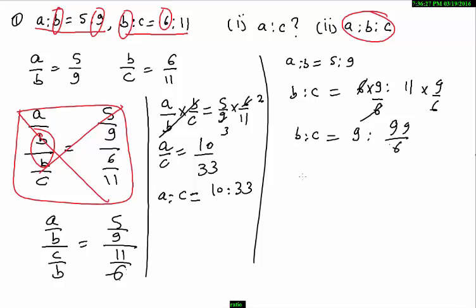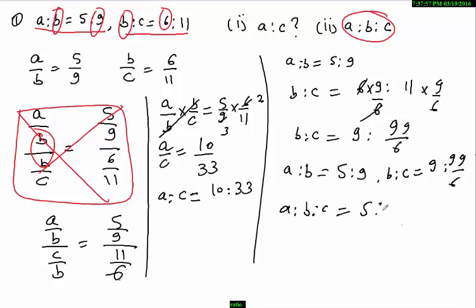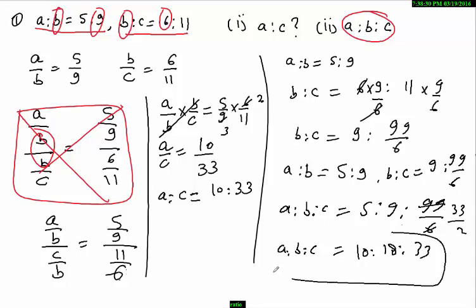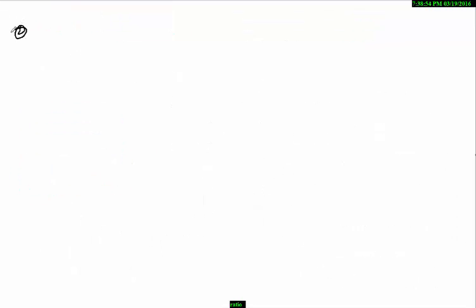Now A is to B is equal to 5 is to 9, and B is to C is equal to 9 is to 99 by 6. So A is to B is to C is equal to 5 to 9 to 99 upon 6. Simplifying — 33 into 2 is 10, 18, 33 — this is the answer.